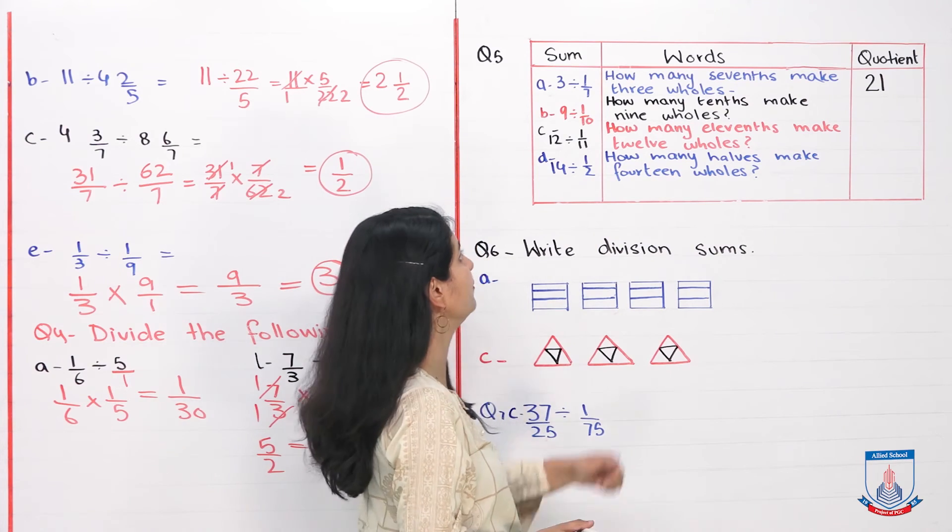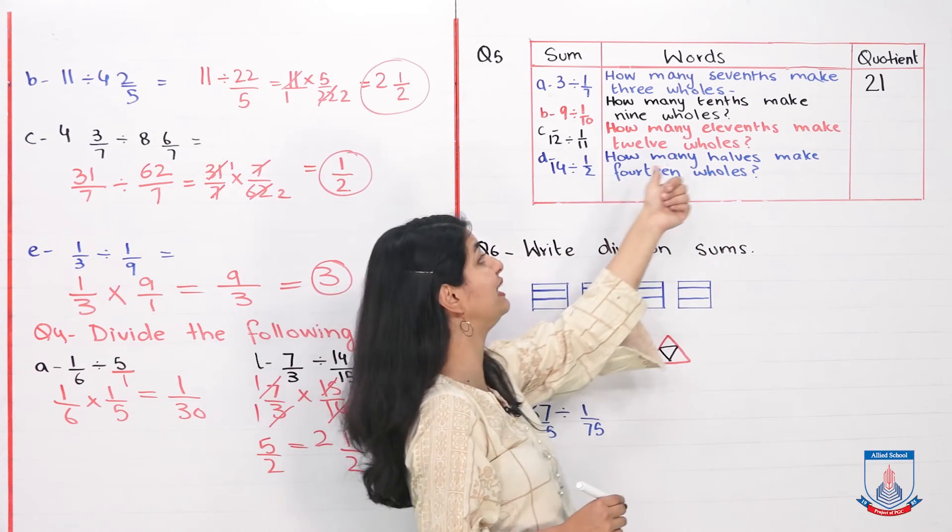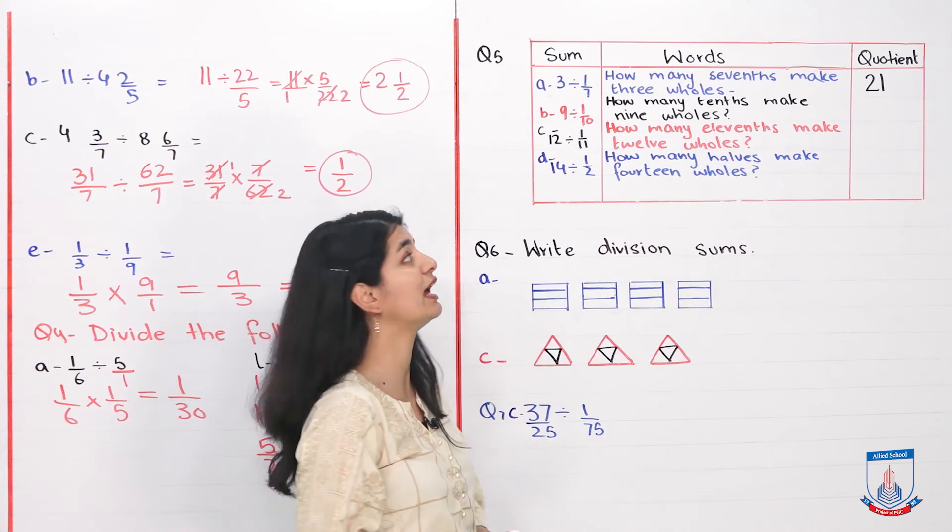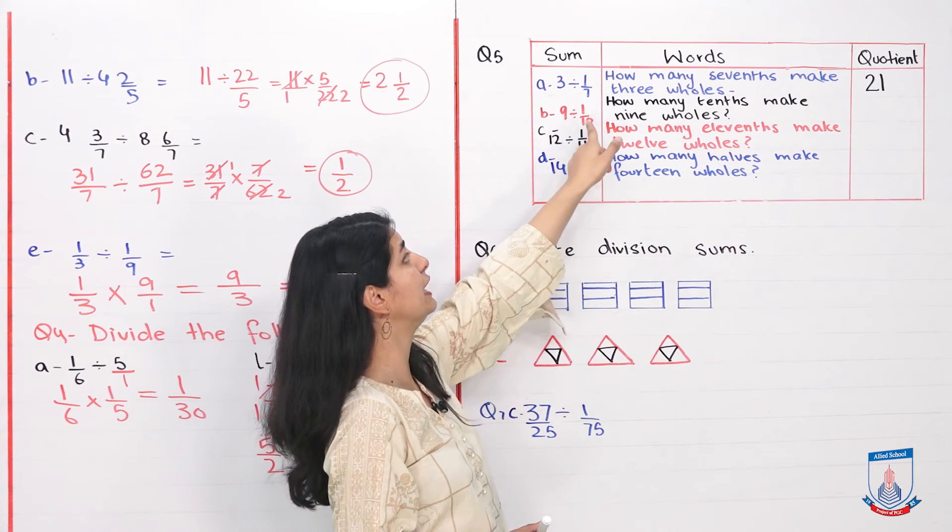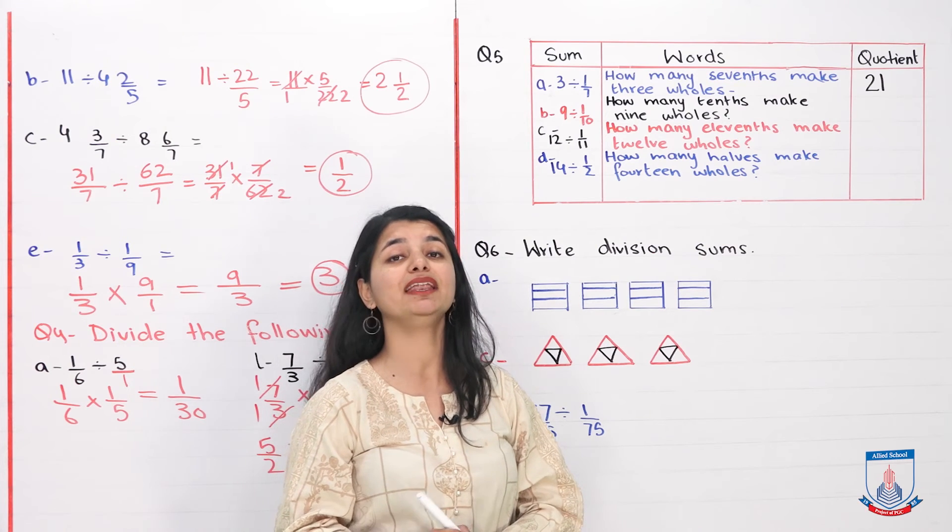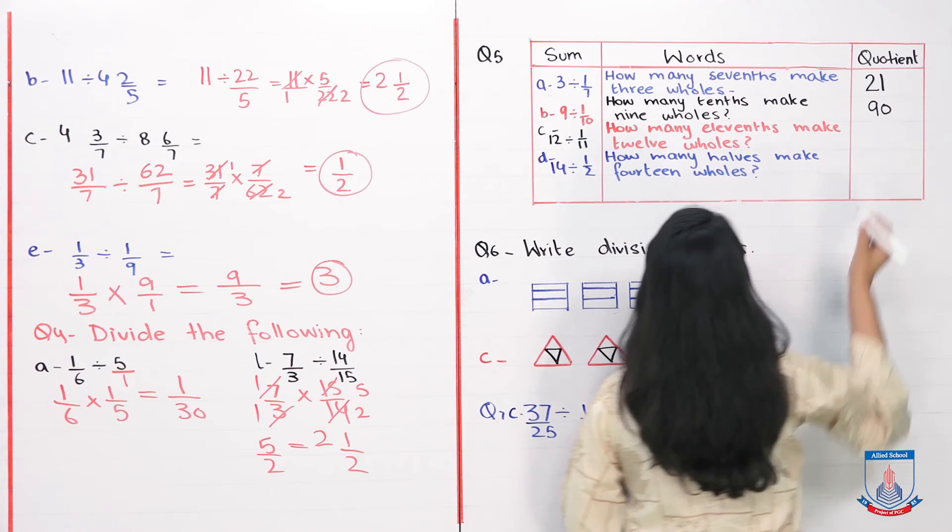Look at part B. How many parts? Ten, so it becomes tenths, and nine wholes. So how many tenths make nine wholes? Now we solve this. Again flip it, ten goes up, one comes down, multiplication, nine into ten is what? Ninety. So our answer is ninety for this part.